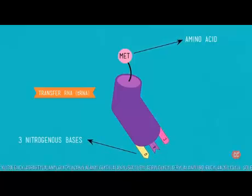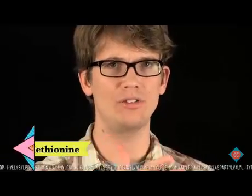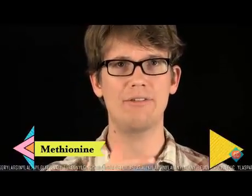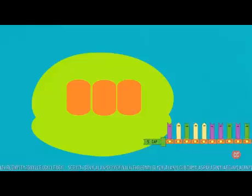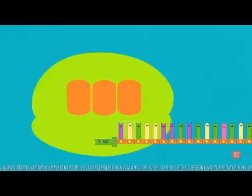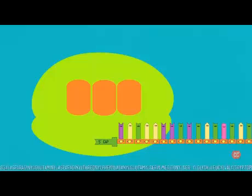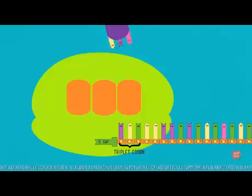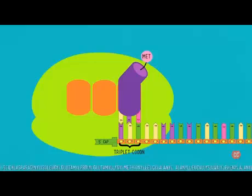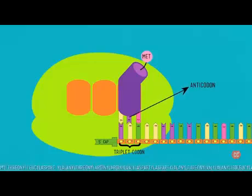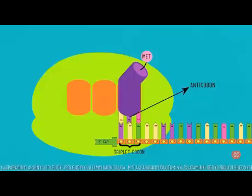On one end of the tRNA is an amino acid; on the other end is a specific sequence of three nitrogenous bases. These two ends are matched to each other — each of the 20 amino acids has its own sequence. For example, if the tRNA carries methionine, it has UAC as the nucleotide sequence on the other end. The mRNA slides through the ribosome, which reads it three letters at a time — each set is called a triplet codon. The ribosome finds the matching tRNA with three bases that pair with the codon; that end of the tRNA is called the anti-codon.